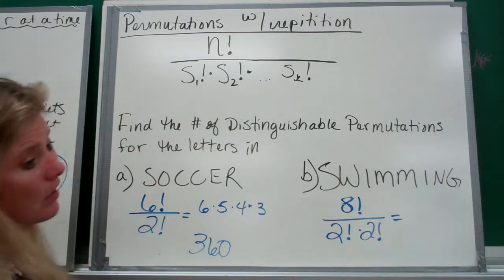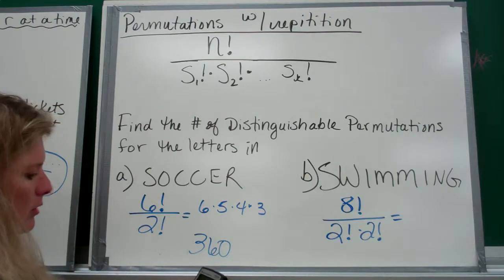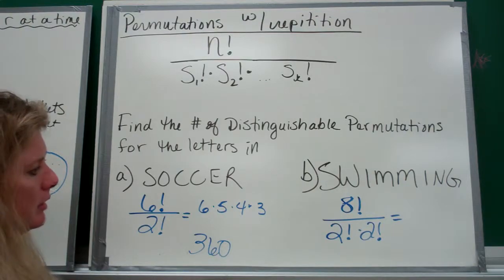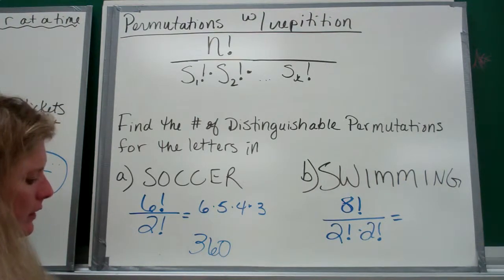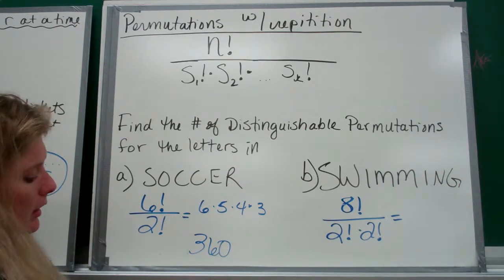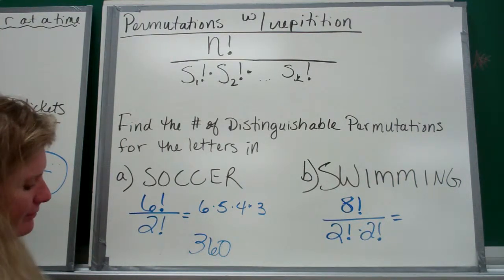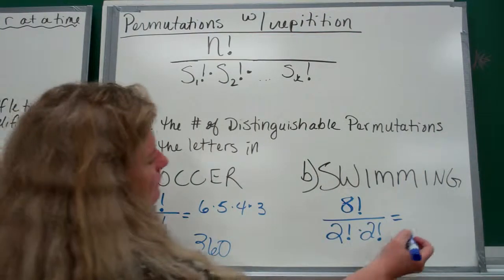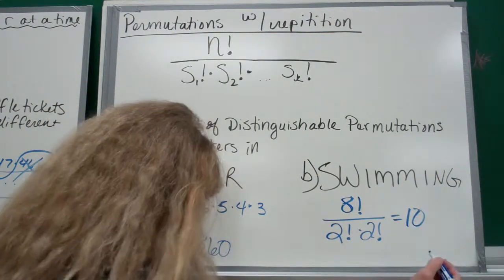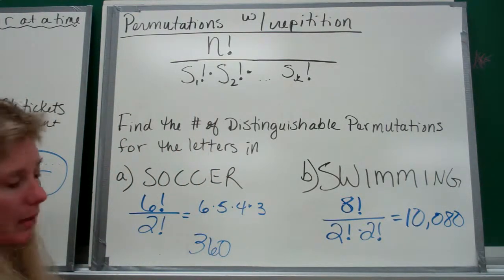With this one, I would use my calculator because I don't feel like doing it the hard way. 8 factorial divided by 2 factorial, which is just 2 times 2. 10,080 is what that one works out to.